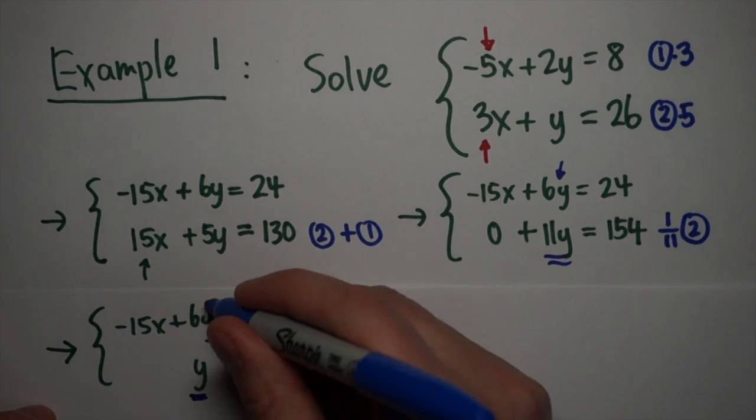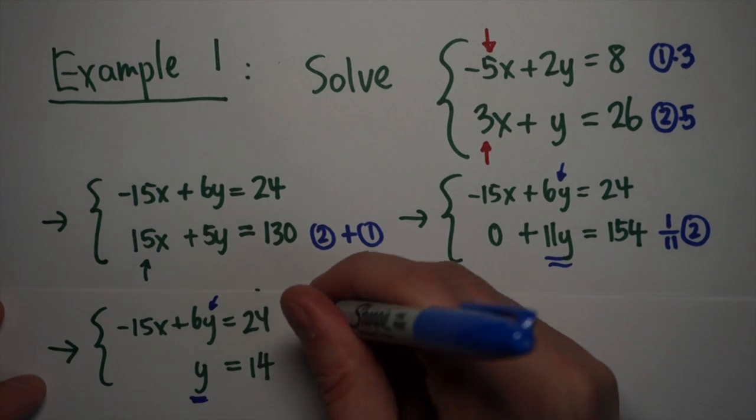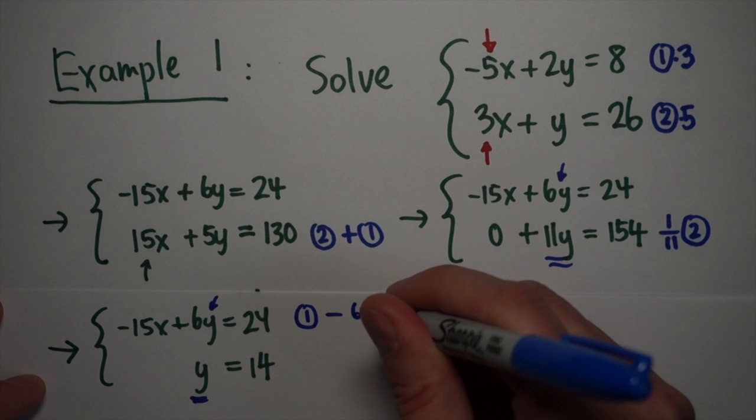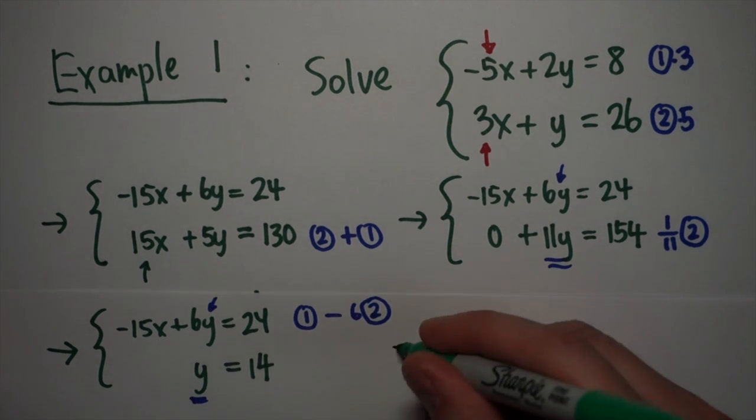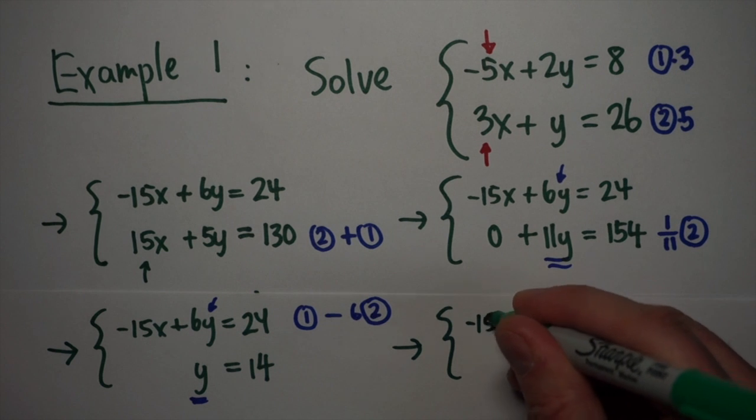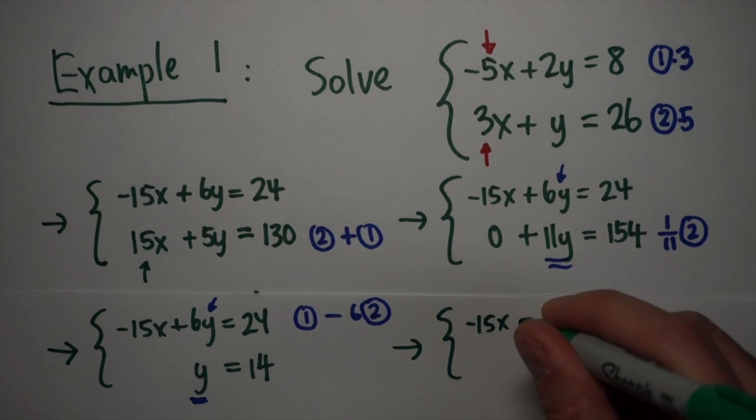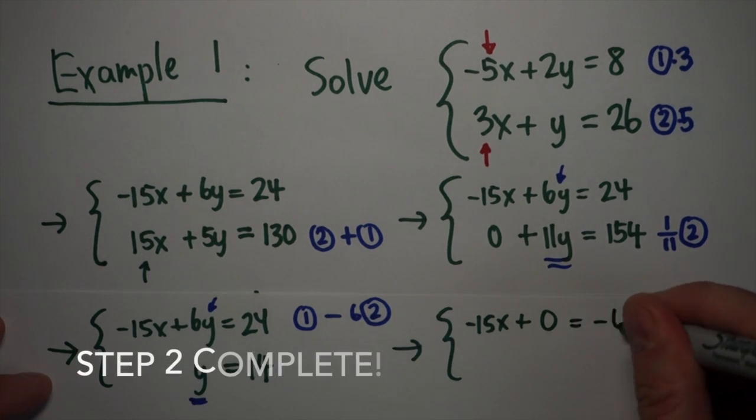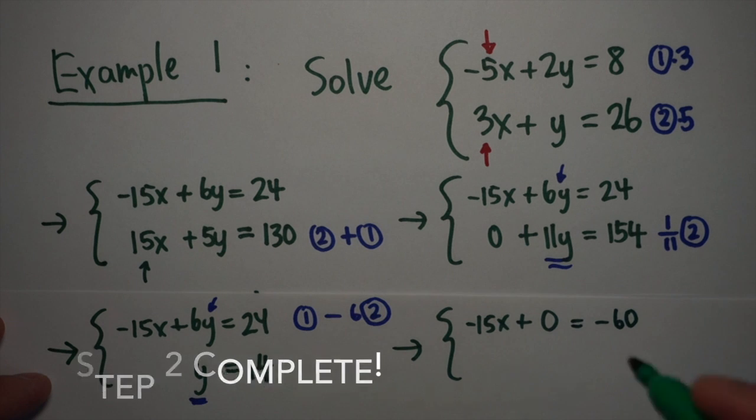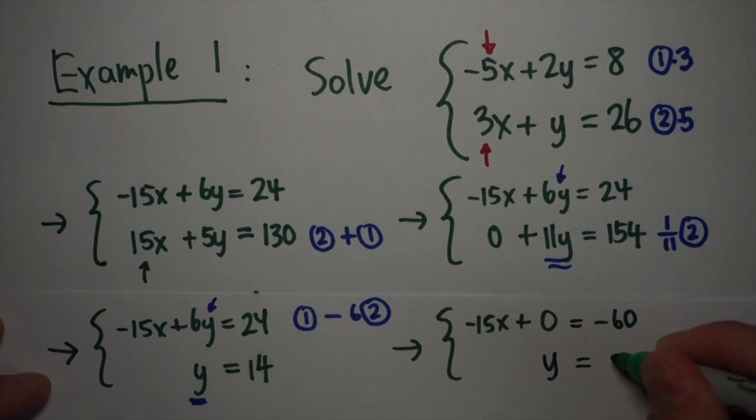Now it's easy to use this y to get rid of the 6y. I do that using the third action. I'm going to take row 1 and subtract 6 times row 2 from it. In general, whenever the variable is by itself, when it's 1 times y in this case, we can get rid of anything above or below it just by using a simple action. So when I do that, negative 15x doesn't change, because there's nothing below it. The 6y minus 6y becomes 0, and then 24 minus 6 times 14 will be negative 60. My y equals 14 doesn't change.